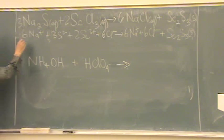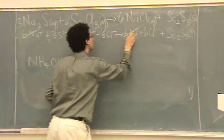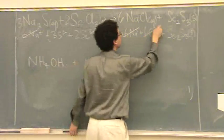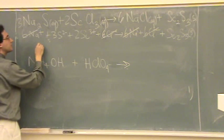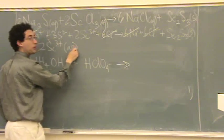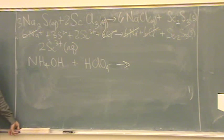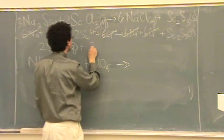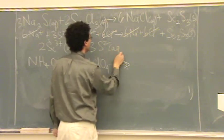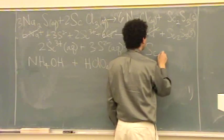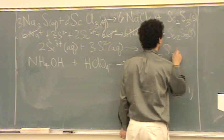Well, you should notice the sodiums will cancel on both sides. And the chlorines will cancel. So all that's left is 2 scandiums 3+—make sure to write aqueous, we'll ask you for the states. You must write the states on the test. You will lose points if you don't write the states. Plus 3 sulfide ions aqueous, and then that goes to scandium sulfide solid.